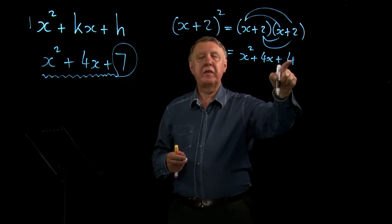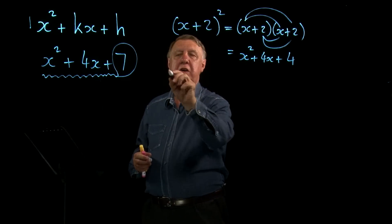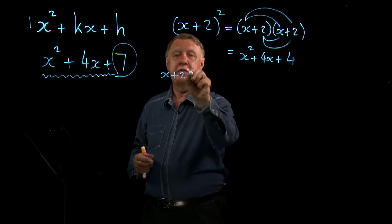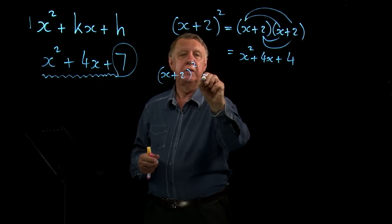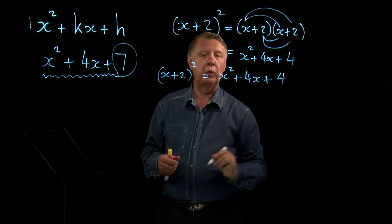We need another 3 here. So what have I achieved so far? Well, I've achieved that x plus 2 squared is x squared plus 4x plus 4.